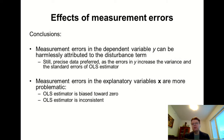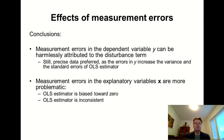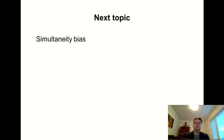Even a poor proxy variable should be better than nothing, because there is some information in a proxy such as an IQ test score. However, we should be aware of measurement errors and their consequences. We will come back to this discussion in the next theme when we talk about instrumental variables. But first I will still cover the third type of endogeneity, commonly known as simultaneity bias. Thanks for your attention and we'll continue in the next lesson.